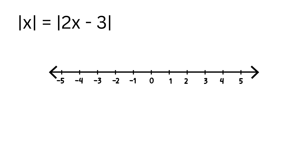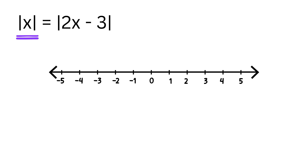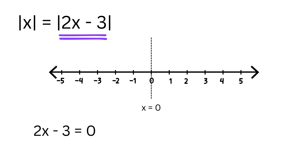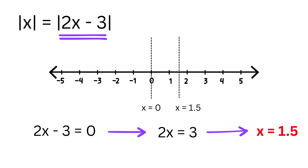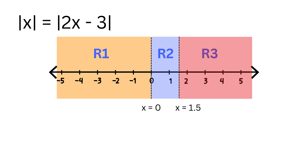A smart, safe way to handle absolute values is to find the critical points where the stuff inside each absolute value changes sign, because at those points the behavior of the expression switches. For the left side, the inner term is x, so the sign changes at x equals zero. For the right side, the inner term is 2x minus 3, so set that equal to zero and solve: we get x equals 1 and a half. So the two critical points that split the number line are 0 and 1.5, creating three regions: region one is x less than zero, region two is x between zero and 1.5, and region three is x greater than 1.5.